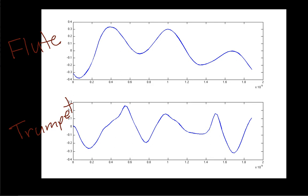The Fourier series will help us understand why, even though they were playing the same note at the same fundamental frequency, they sound different. The idea is that the Fourier series allows us to decompose these waveforms into a fundamental frequency — the note you hear, in this case middle C — plus harmonics. The harmonics are sinusoids at integer multiples of the fundamental frequency, and the different harmonics in the sounds determine what we hear and help us distinguish between a trumpet and a flute.